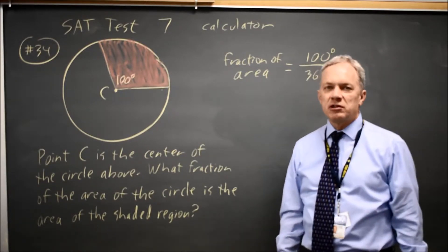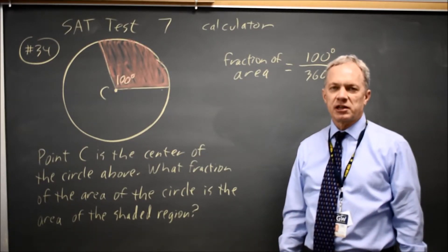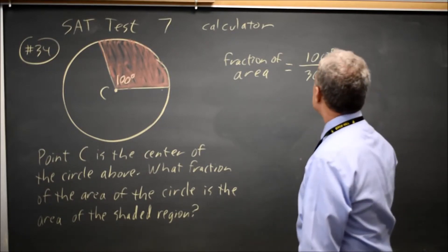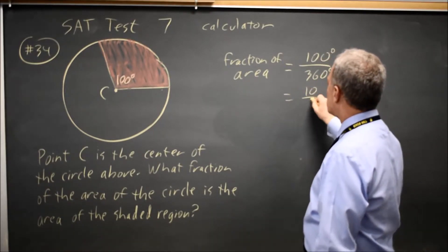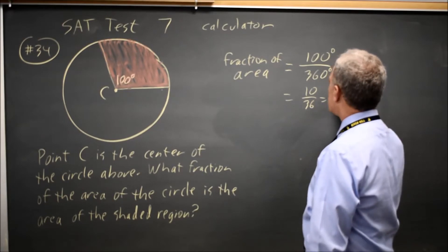If you need it, the formula sheet at the start tells you that the circle has 360 degrees. That simplifies to 10 over 36, or 5 over 18.